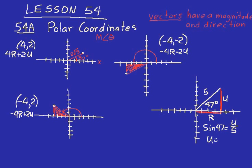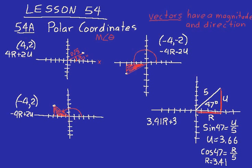So U equals 3.66. Then for R: cosine of 47 equals R over 5, adjacent over hypotenuse, so R equals 5 times cosine of 47. Make sure you do cosine and not sine again. So 5 cosine 47 equals about 3.41. Now you can write the answer: you could write it as the point 3.41, 3.66, but the way they want you to write the answer is in terms of R and U. So you say 3.41R plus 3.66U. That's your answer for that problem.